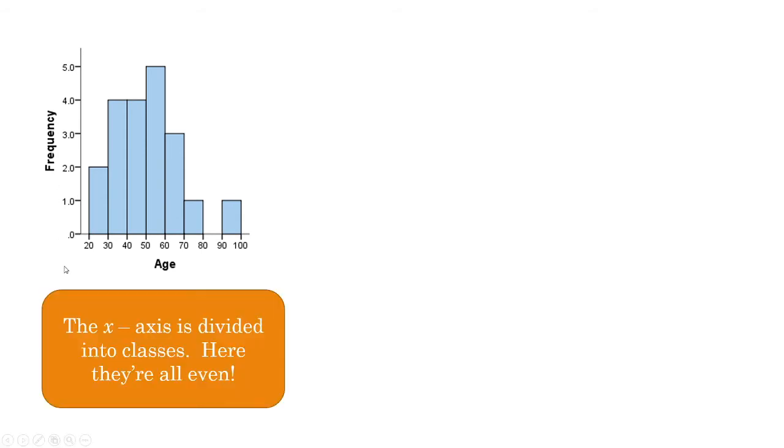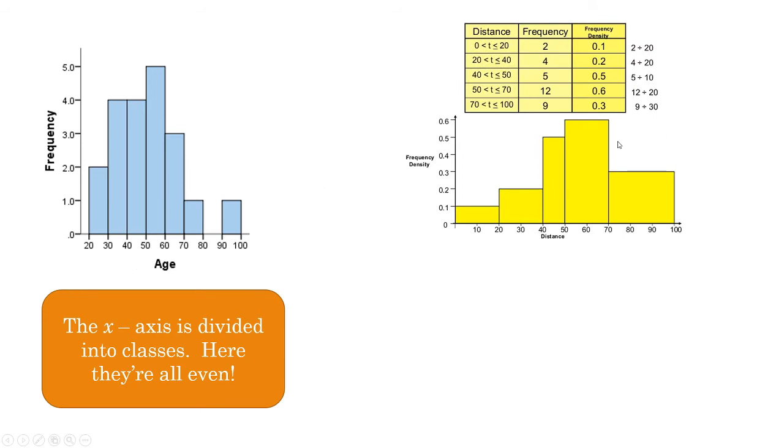Your x-axis is your classes and the frequency is the y-axis. But if you have a situation like this where you have class widths that are uneven, so here you have a 20 and a 20 and a distance here of 10, 20, and then 30, you can see our class widths are uneven.